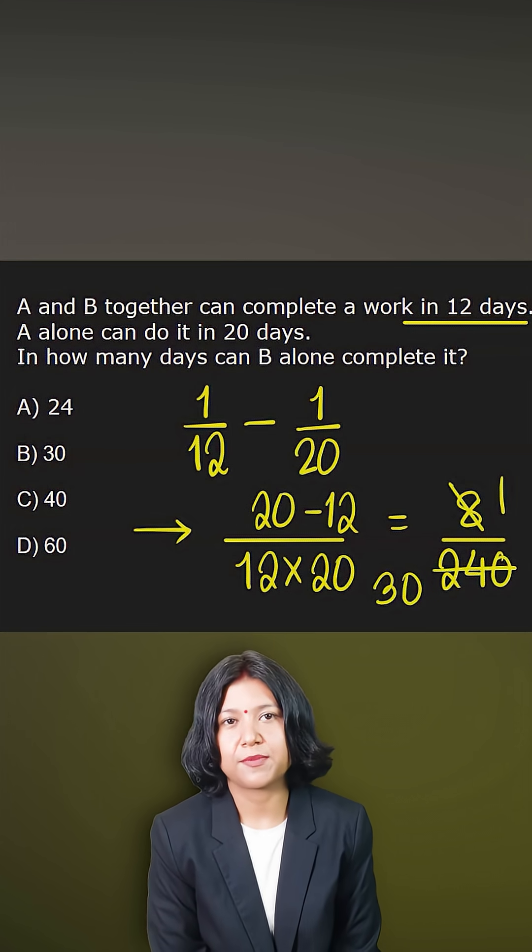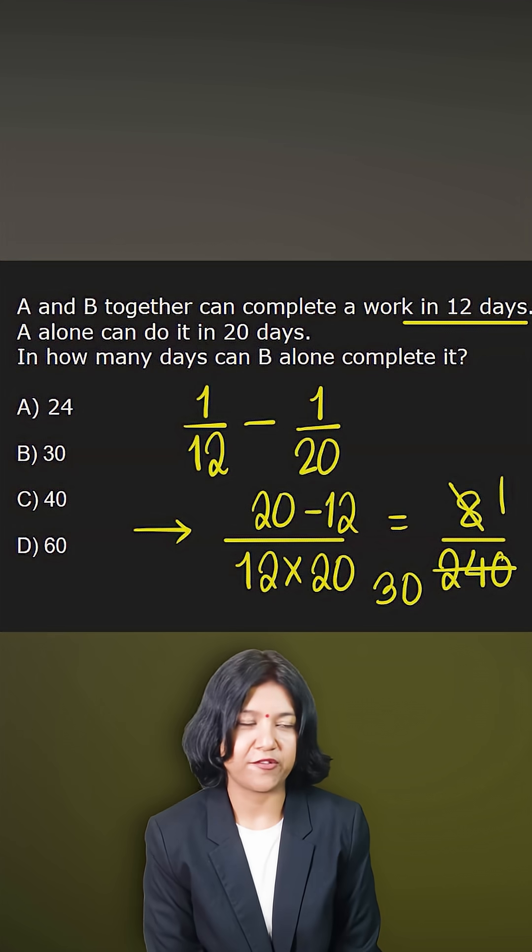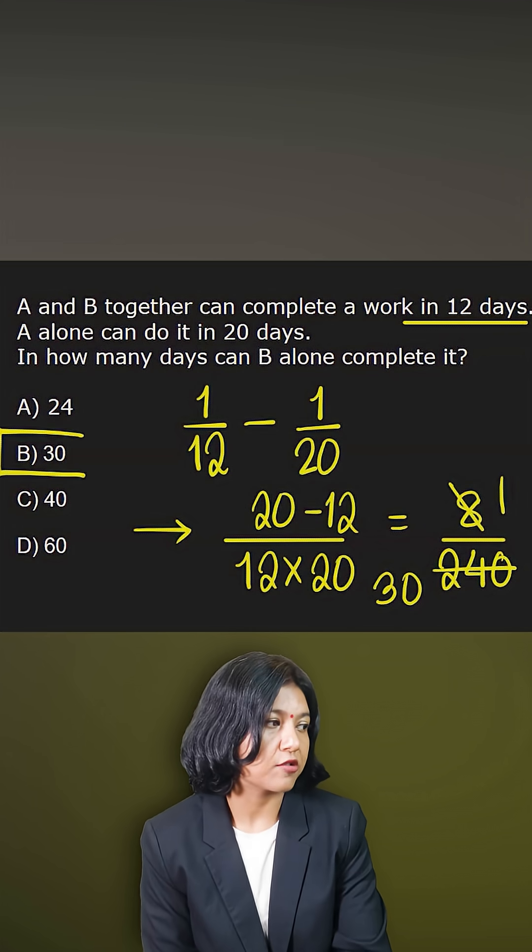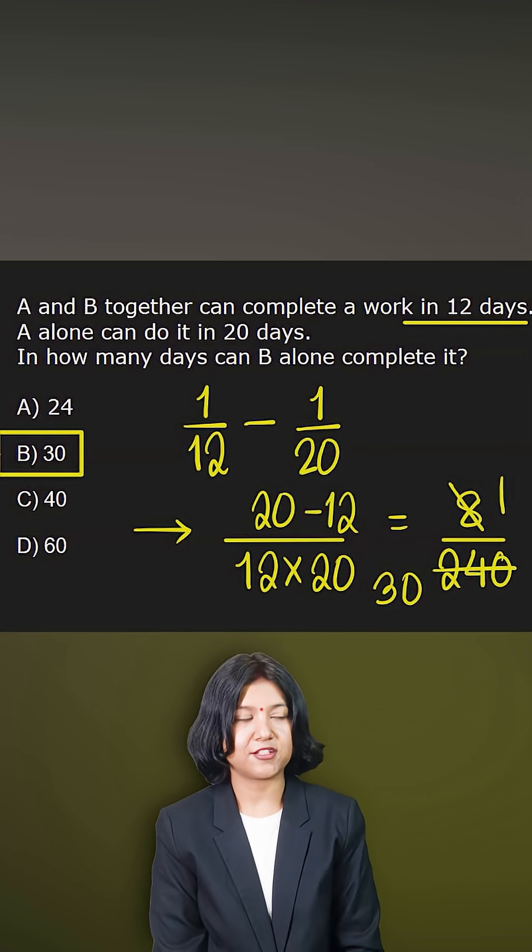Hence, B has to complete the work in the reciprocal of it, which is just 1 by 30. Reciprocal is just 30. So 30 days B will take to complete the same work. That's it. Thank you.